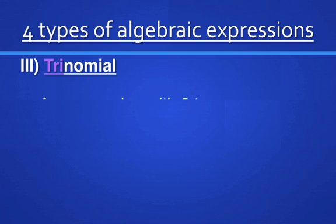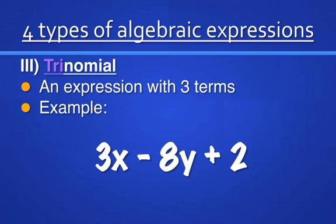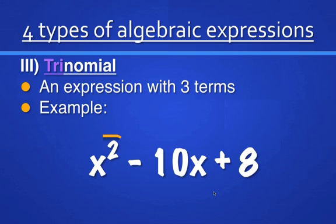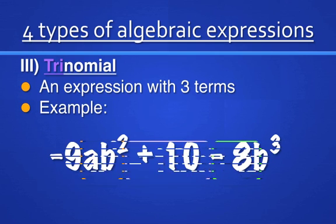The third is a trinomial. A trinomial is an expression with three terms. The prefix 'tri' means three — the same as in the word triangle, which is a shape with three sides, or a tripod, which is a stand with three legs. Tri always means three. For example, 3x minus 8y plus 2: a term is separated by addition or subtraction, so my first term is 3x, my second term is negative 8y, and my third term is positive 2. Another example: x squared minus 10x plus 8 — all three of those are terms.